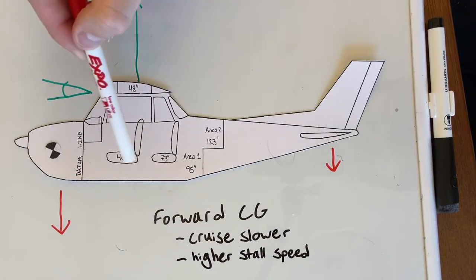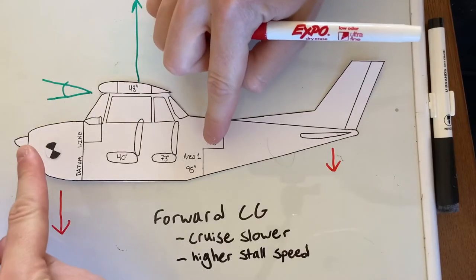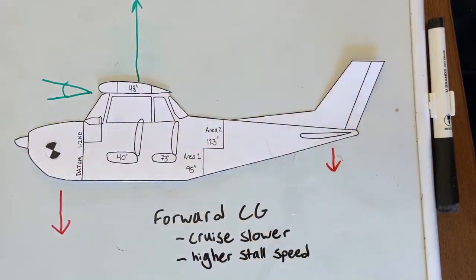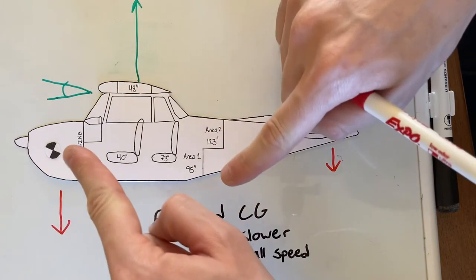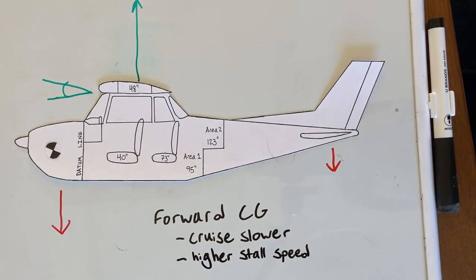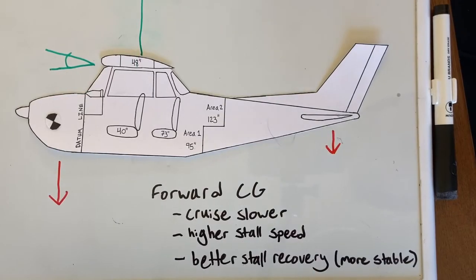But we also have one good thing that comes from this: the airplane is going to have a little bit better stall recovery characteristics than it would with a further aft CG. This is because the further forward the CG is, the greater the tendency for the airplane to nose down. And that's how we recover from a stall — we lower the nose to reduce the angle of attack. So the airplane has more of a tendency to drop its nose and recover on its own from a stall. The airplane is going to have better stall recovery and be more stable with a far forward CG.